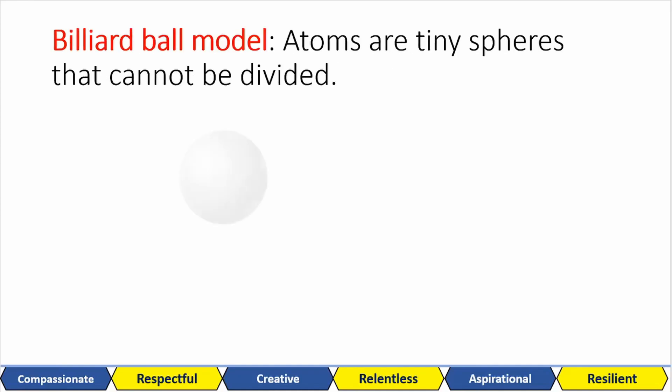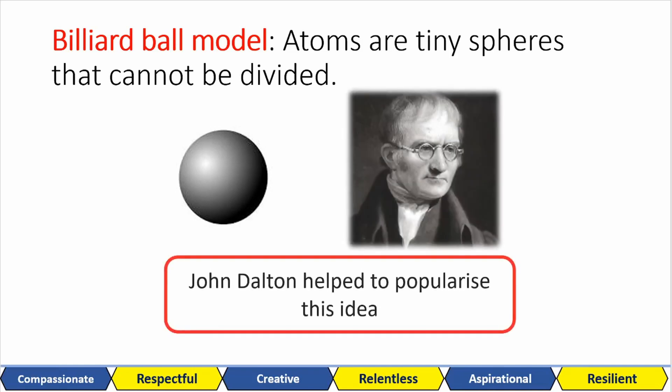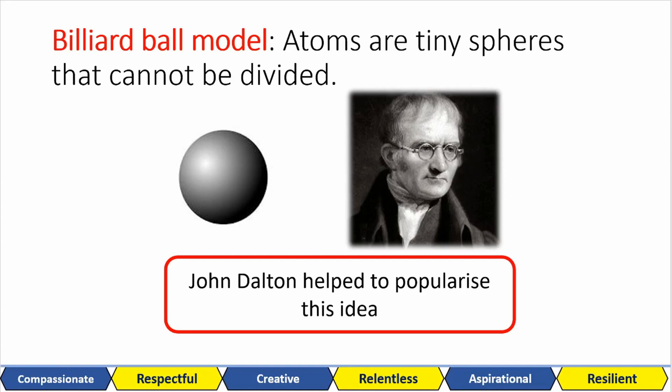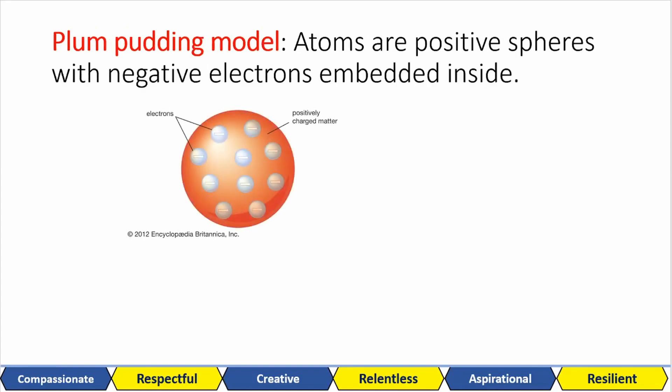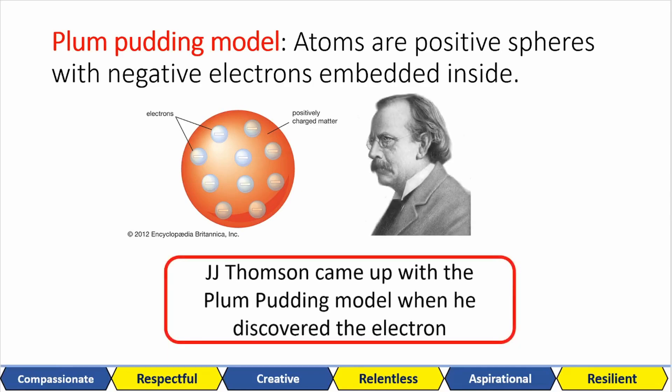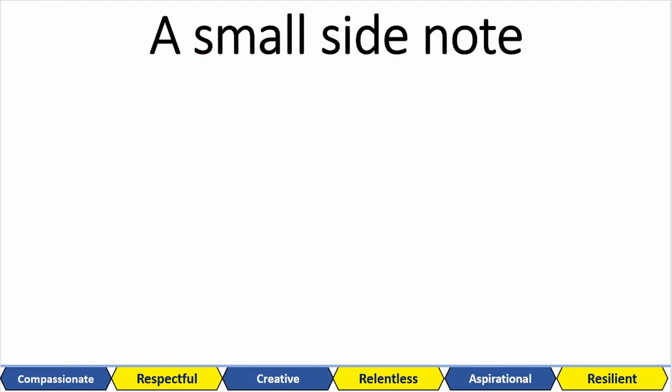We had other models of the atoms before. The Billiard Ball model views atoms like tiny spheres that cannot be divided. This was popularized by John Dalton. Then we've got the Plum Pudding model, which had atoms as positive spheres with negatively embedded electrons. This came from J.J. Thompson after he discovered the electron.